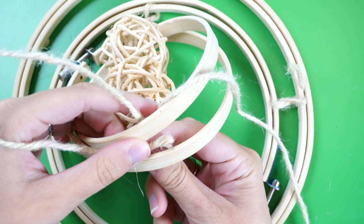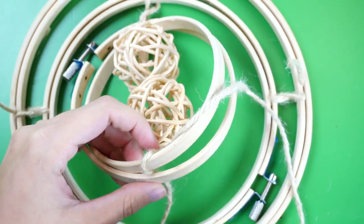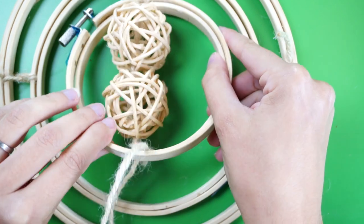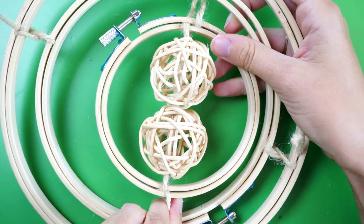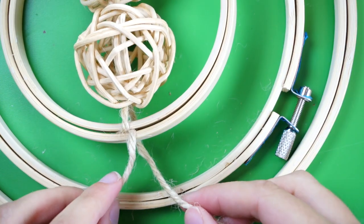Next attach the twine to the bottom of the small hoop by threading one piece from the top and one piece from underneath. Pull the ends to move it into place and tighten the hourglass section.